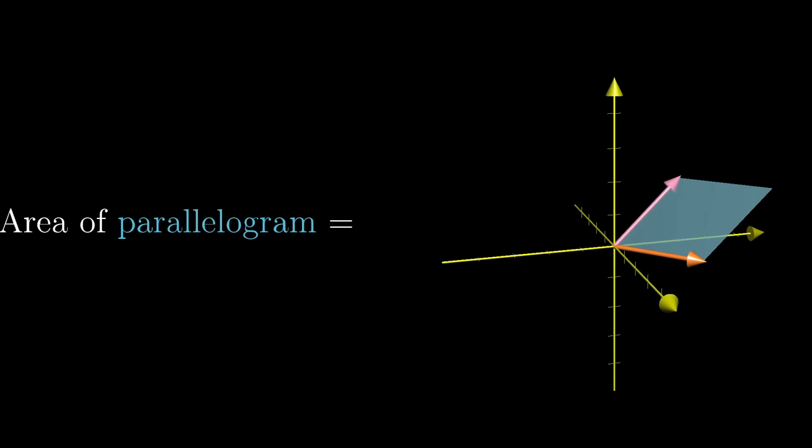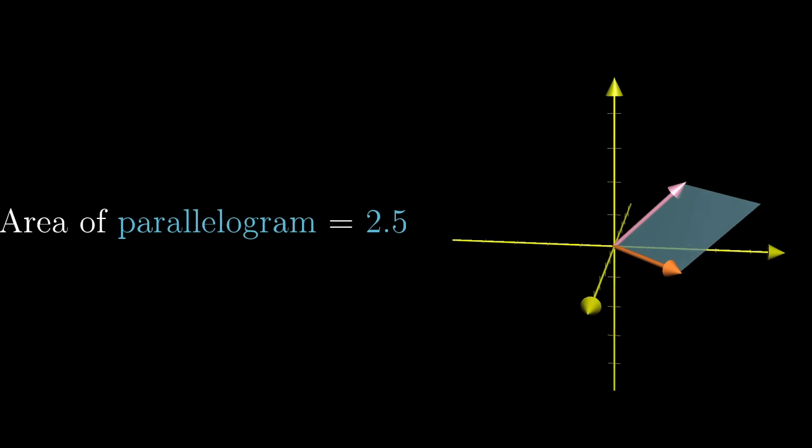Just as before, we're still going to consider the parallelogram defined by the two vectors that we're crossing together, and the area of this parallelogram is still going to play a big role. To be concrete, let's say that the area is 2.5 for the vectors shown here.